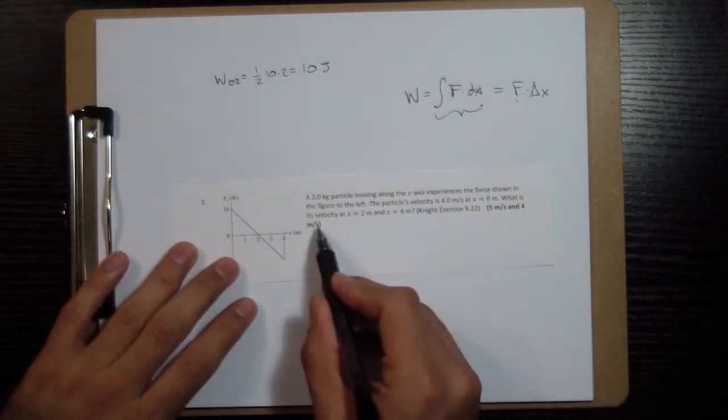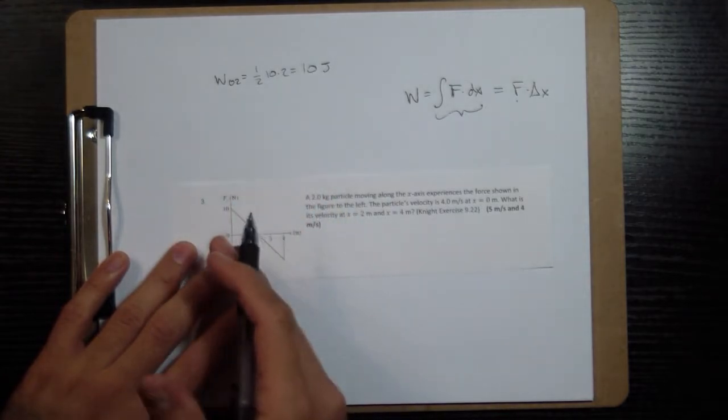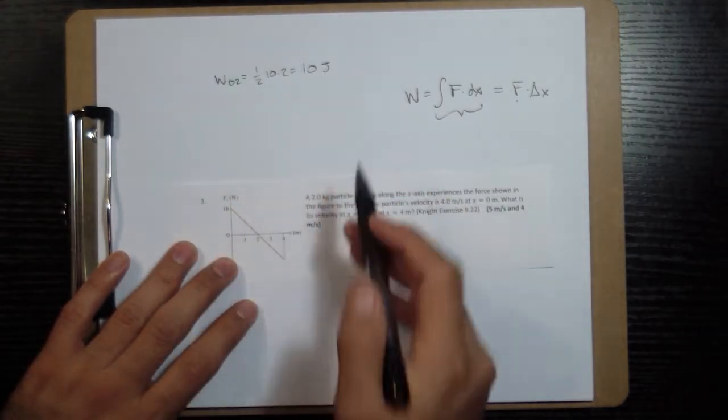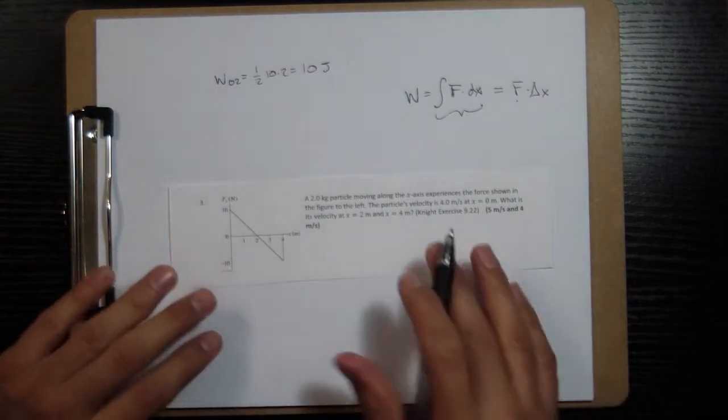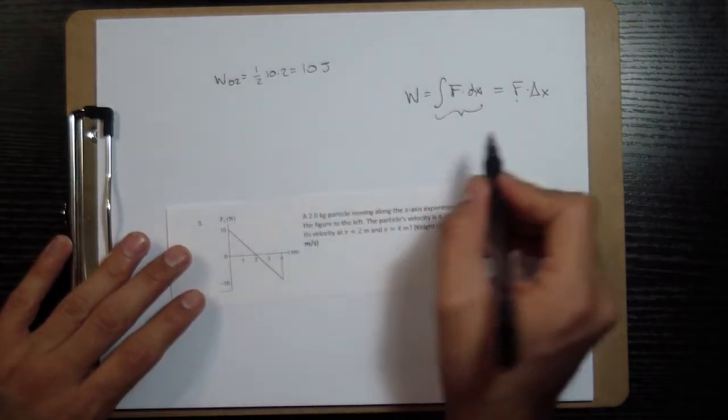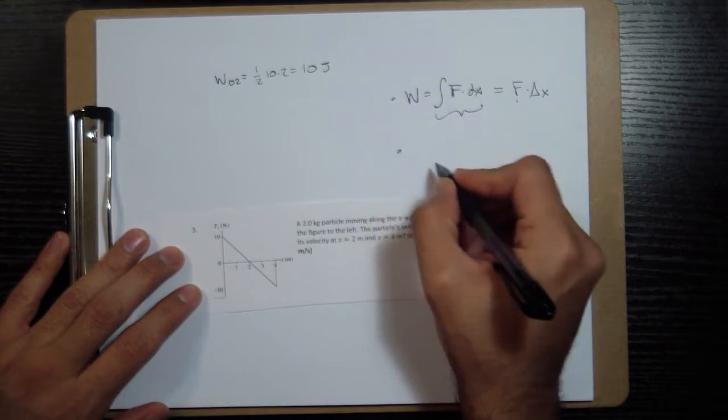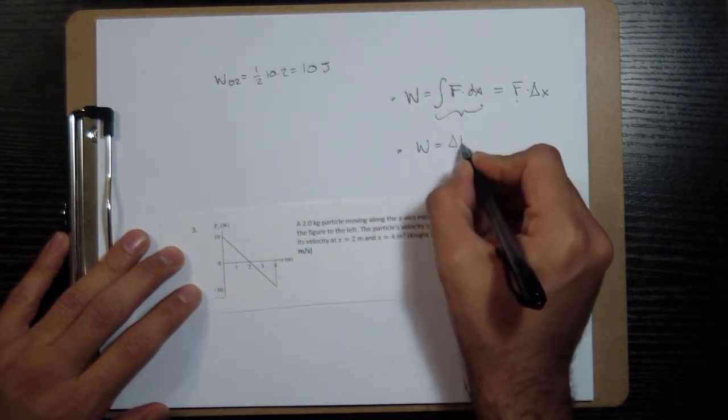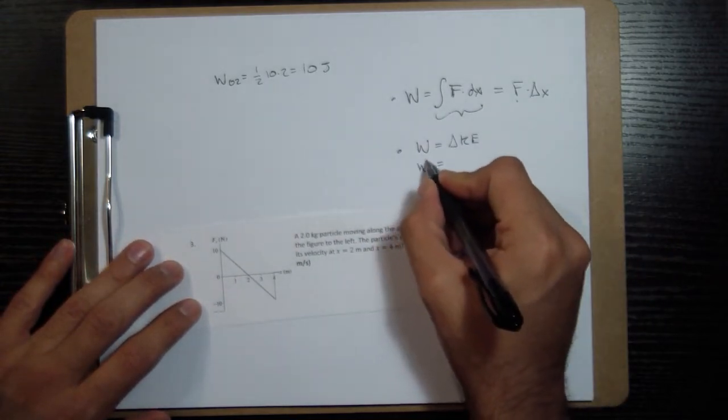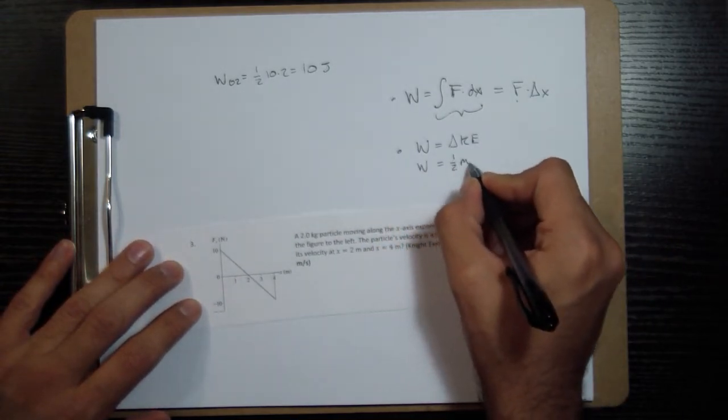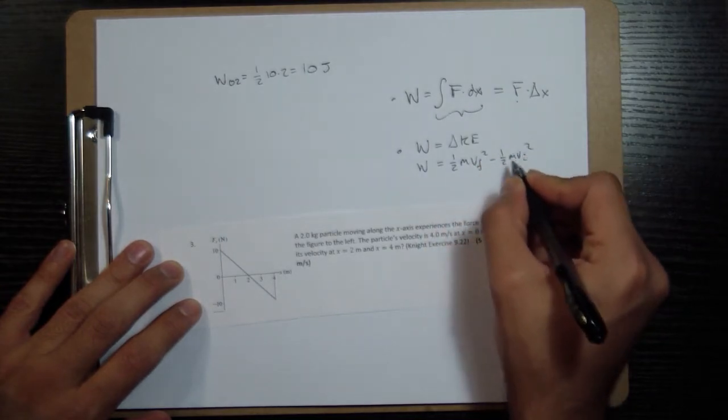So we're looking at this first question what is the velocity at x equals 2 meters? And so we know the work done from getting from 0 to 2 meters is 10 joules. And so if we know the change in energy we can figure out the change in the velocity because we know that work and kinetic energy are related to each other through the work energy theorem which is that the work done is equal to the change in kinetic energy and the change in kinetic energy is going to be 1 half m v final squared minus 1 half m v initial squared.